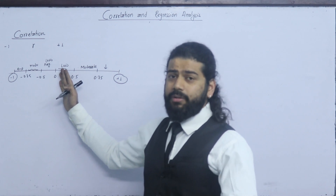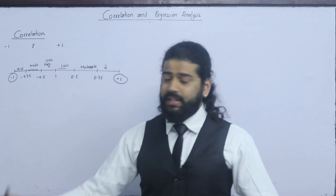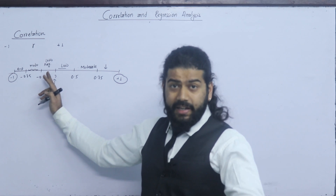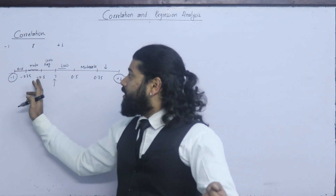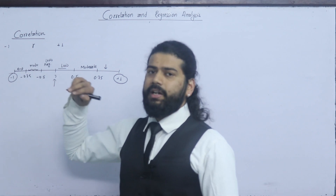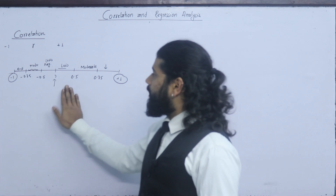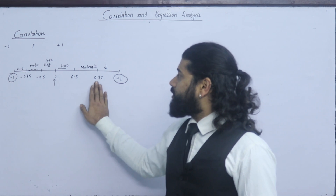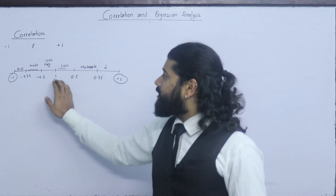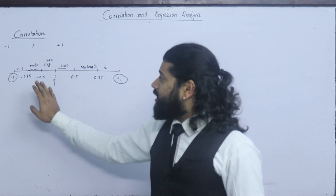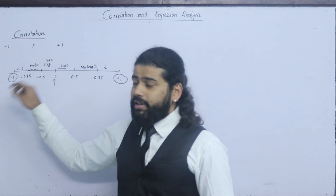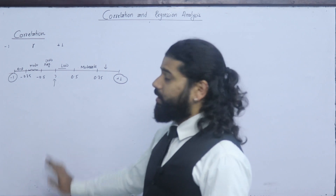What is low degree? Low degree means close to zero. If R value equals 0, there is no relation. So: plus 1 is perfect positive, 0.75 to 1 is high degree positive, 0.5 to 0.75 is moderate positive, 0 to 0.5 is low degree positive, 0 is no relation, 0 to minus 0.5 is low degree negative, minus 0.5 to minus 0.75 is moderate negative, minus 0.75 to minus 1 is high degree negative, and minus 1 is perfect negative.